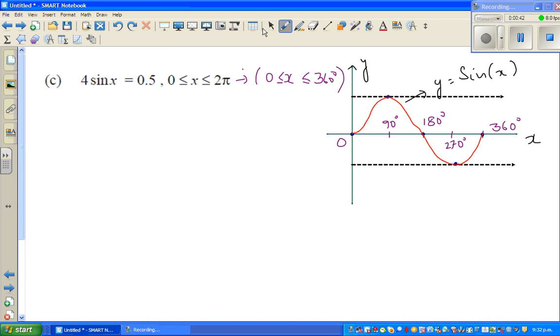So this is a sine curve. It's always good if you know how to draw a sine curve - this is helpful. What I'm going to do is treat this as a simple equation. If I divide both sides by 4, sine x equals 0.5 divided by 4, which is 0.125.